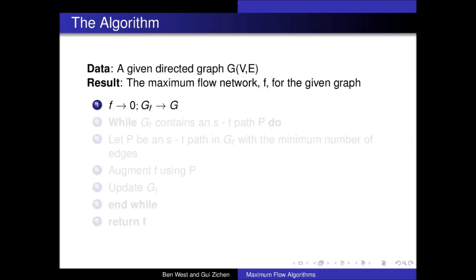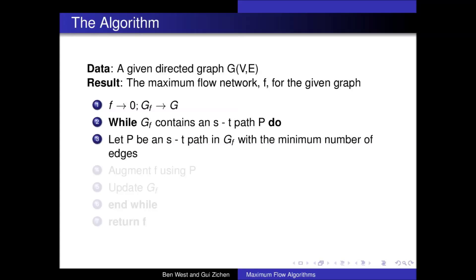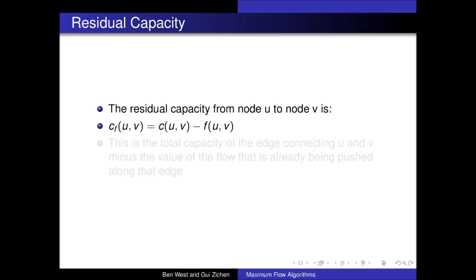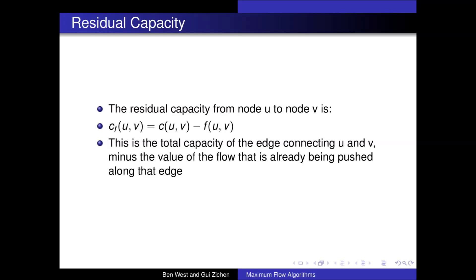We can take a look at the algorithm expressed using pseudocode. Our data is a directed graph, and the result we want is the maximum flow network for the graph. We begin by setting our flow to zero and our residual network to the given graph. Then, while our residual network contains an augmenting path, we select the path with the minimum number of edges and augment using this path, then update our residual network. When no augmenting paths remain, we break out of our while loop and return our value of f. The residual capacity of an edge connecting nodes u and v is simply the total capacity of that edge minus the value of the flow already being pushed along it.